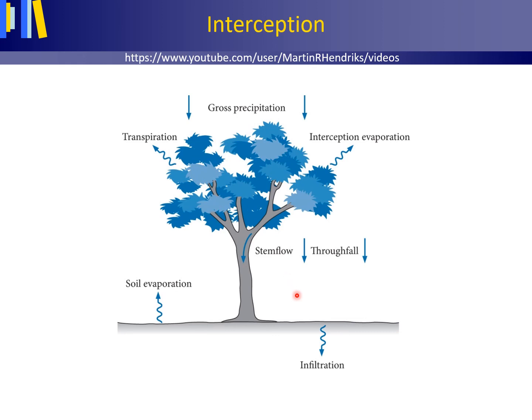On contact with the soil, water may trickle into pores or cracks of the soil, a process called infiltration. Within the unsaturated zone, water may move further down to the water table, a process known as percolation.